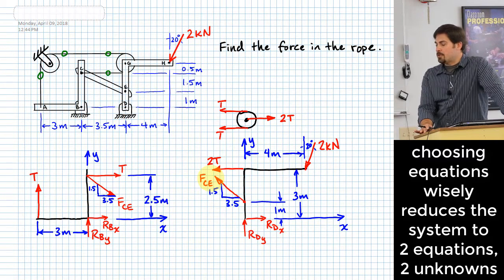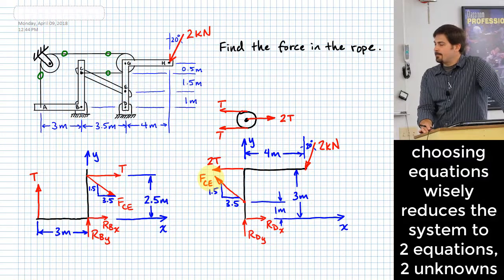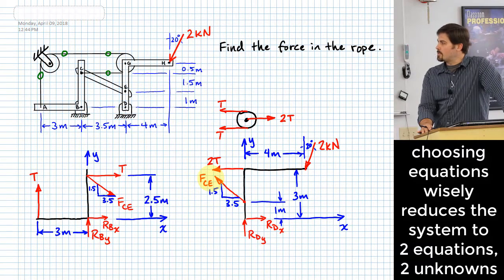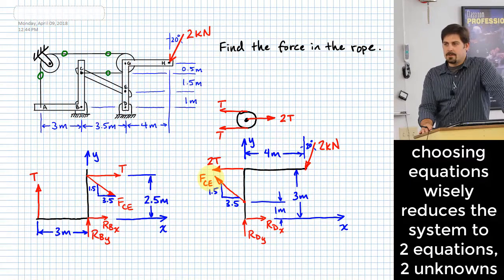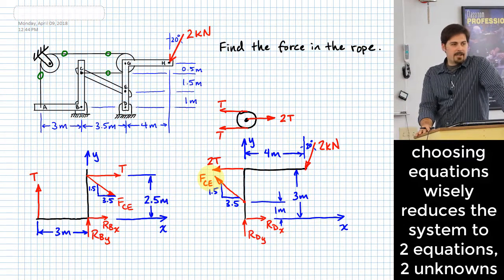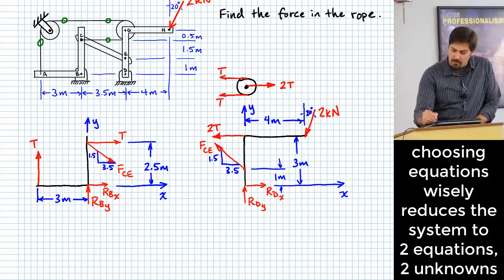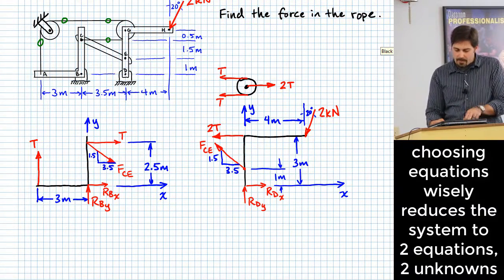Good news: we don't have to go to the worst case. Remember that one of the things you can do is pick shrewdly where you take moments. For the left free body diagram, where's a good place to take a moment? Point B. Why? We don't care about RBX or RBY — not for this question anyway. If we pick point B, the resulting equation eliminates those two variables, which is fine since we don't care about them.